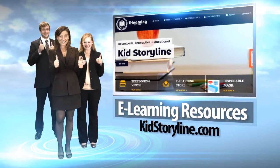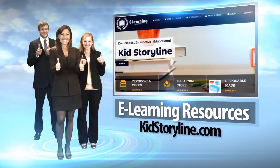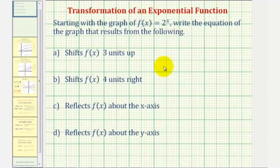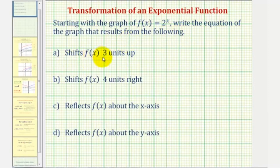Let's get started. Starting with the graph of f of x equals two raised to the power of x, we want to write the equation of the graph that results from the following: Part A shifts f of x three units up, Part B shifts f of x four units right, Part C reflects f of x about the x-axis, and Part D reflects f of x about the y-axis.